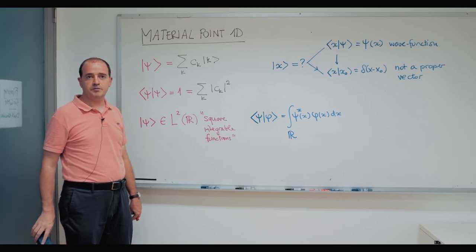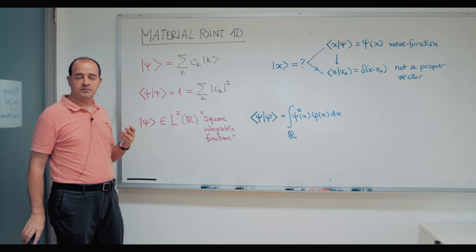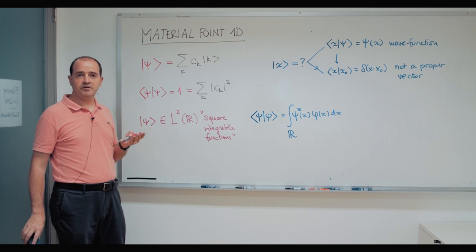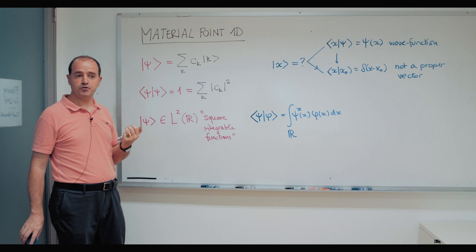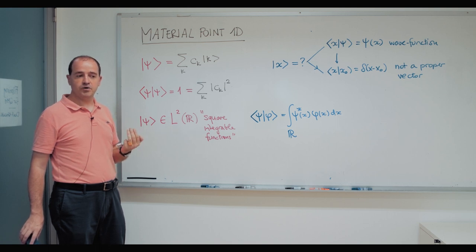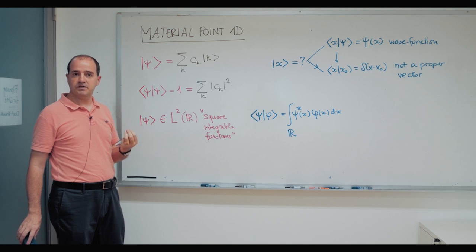We're now moving to the description of the material point. Remember that the material point is one of the most intuitive mechanical systems. It's a system that is described by position and momentum. For this chapter, we're going to focus on material point in one dimension. Therefore, both position and momentum will be just one real number.